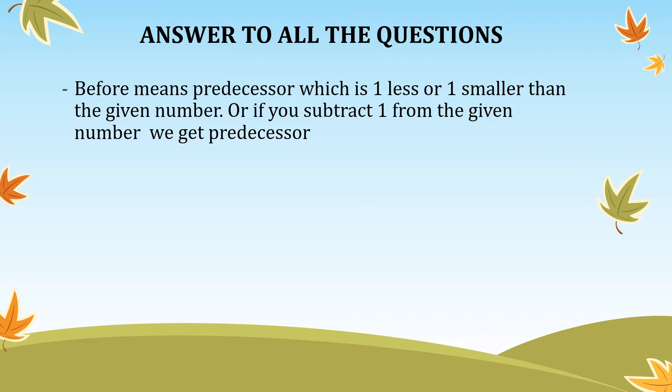Think of it this way — before means who came first. If you are given a number, the one before it is one smaller. For example, before 2 is 1, because we subtract 1 from 2. So that is the meaning of before. Now let us discuss the meaning of after.